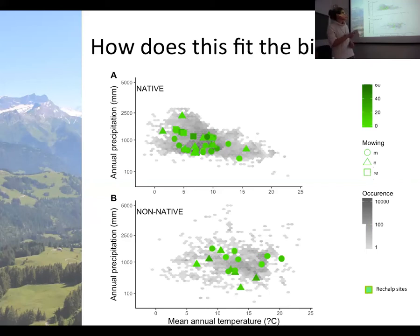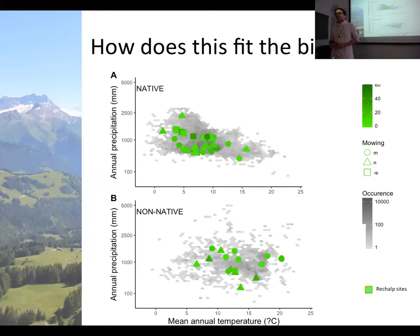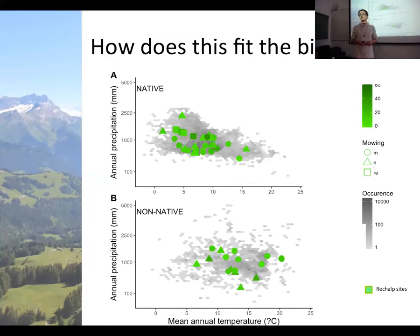An important caveat: although the sites appear spread in environmental space, geographically they are very clustered — 19 populations within 700 square kilometres. This should be borne in mind when using the data, since geographic distance is meaningful for many ecological and genetic processes. Other PlantPopNet sites in Ireland or California may be clustered too, but the scale differs substantially.